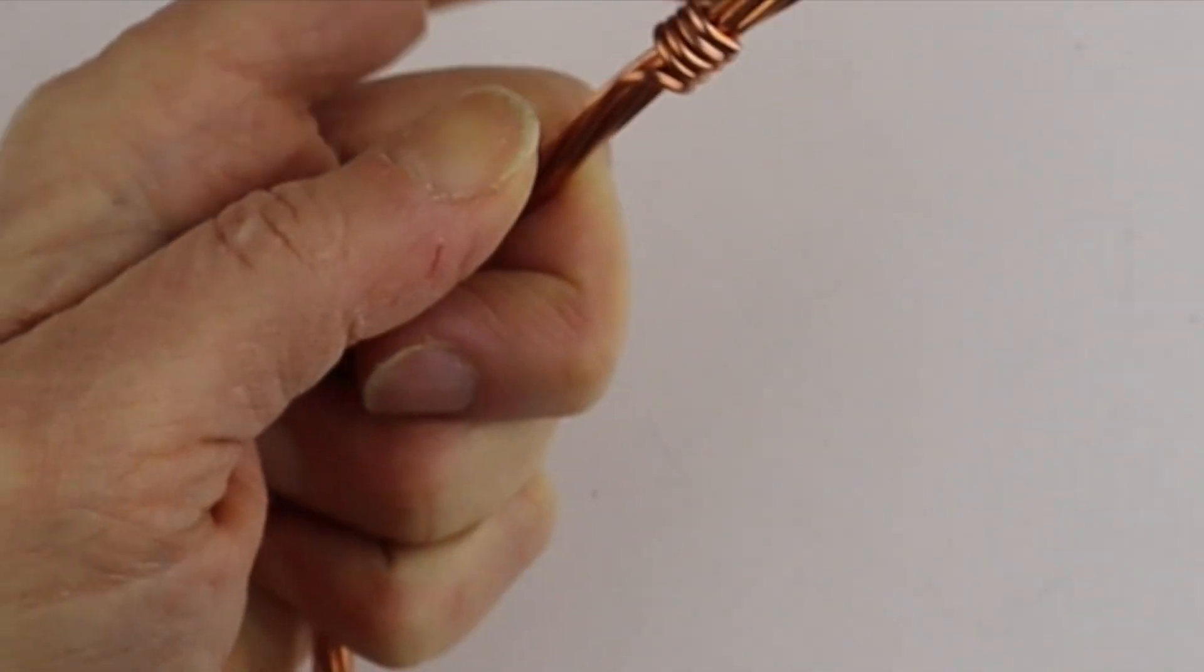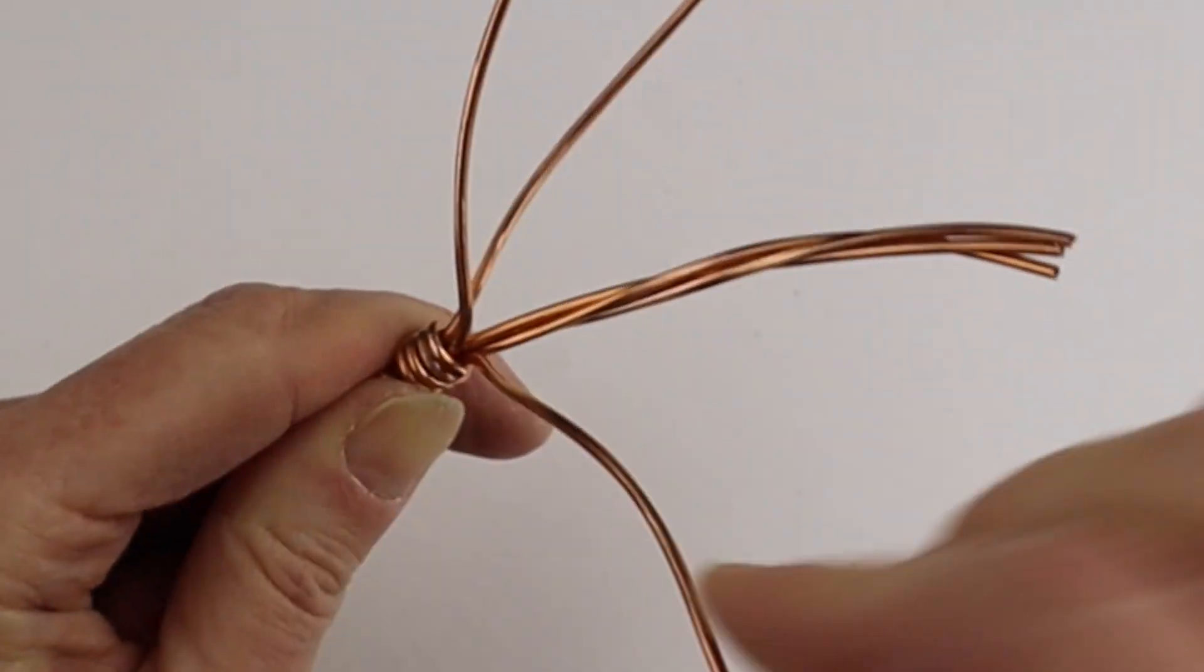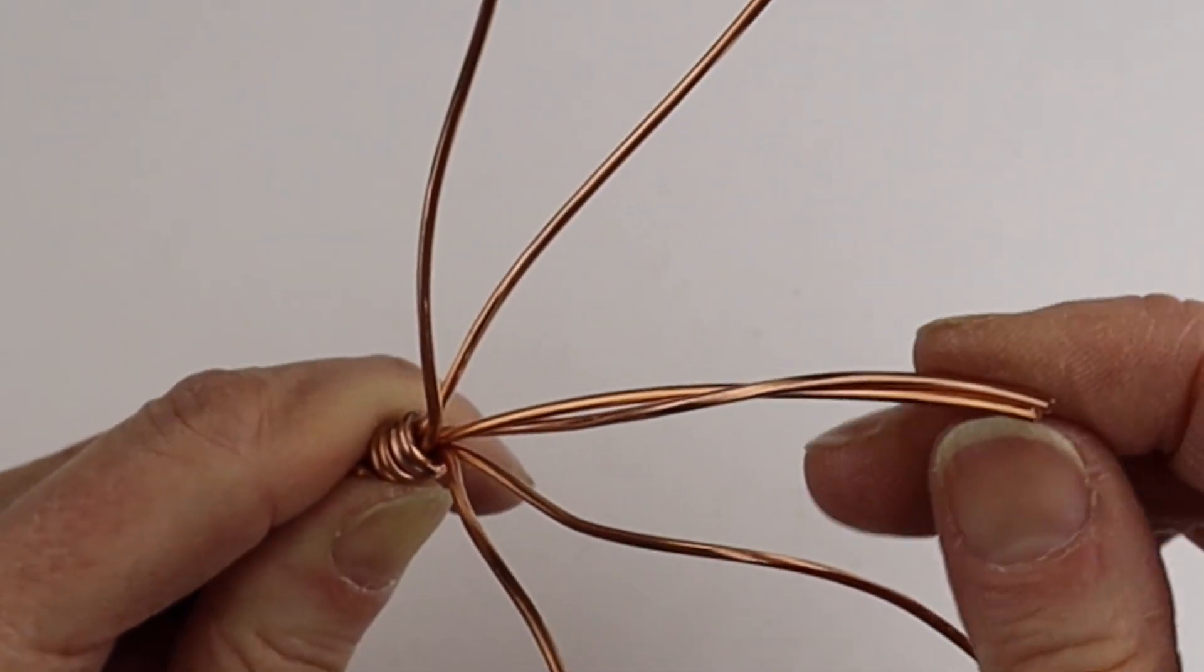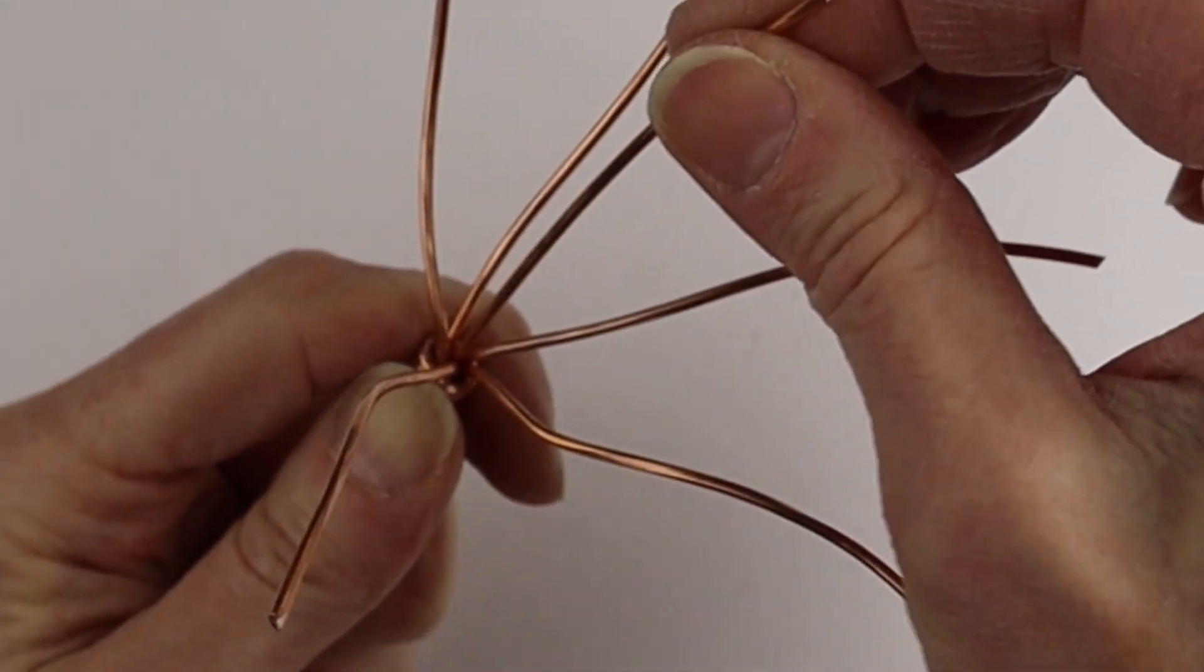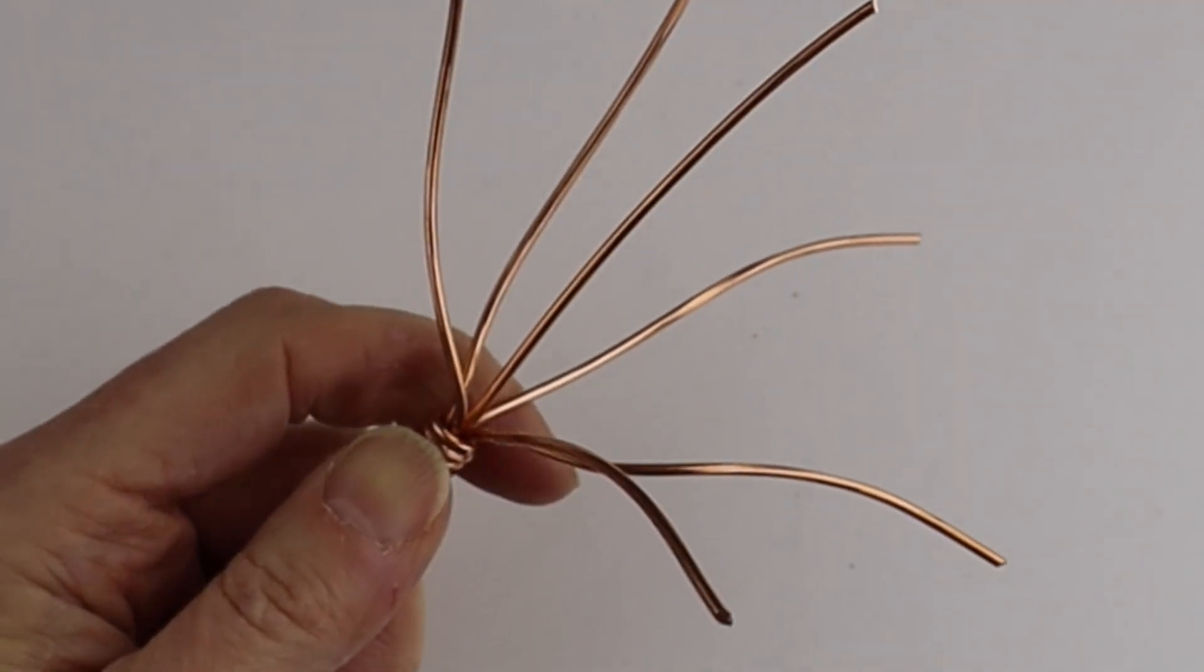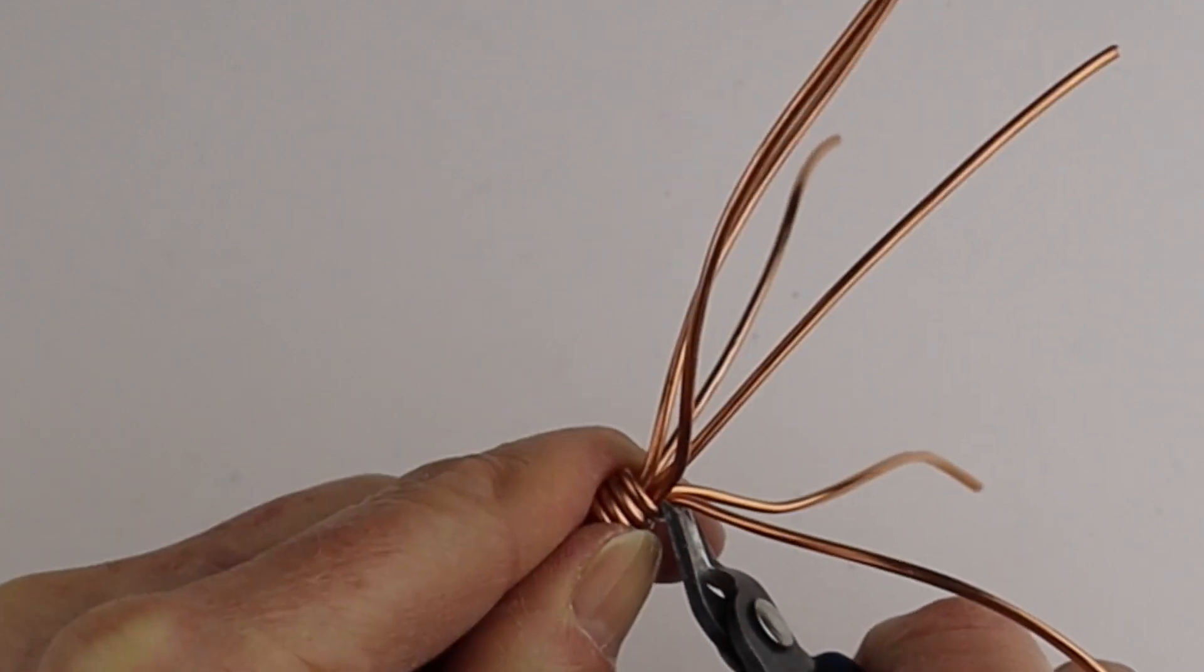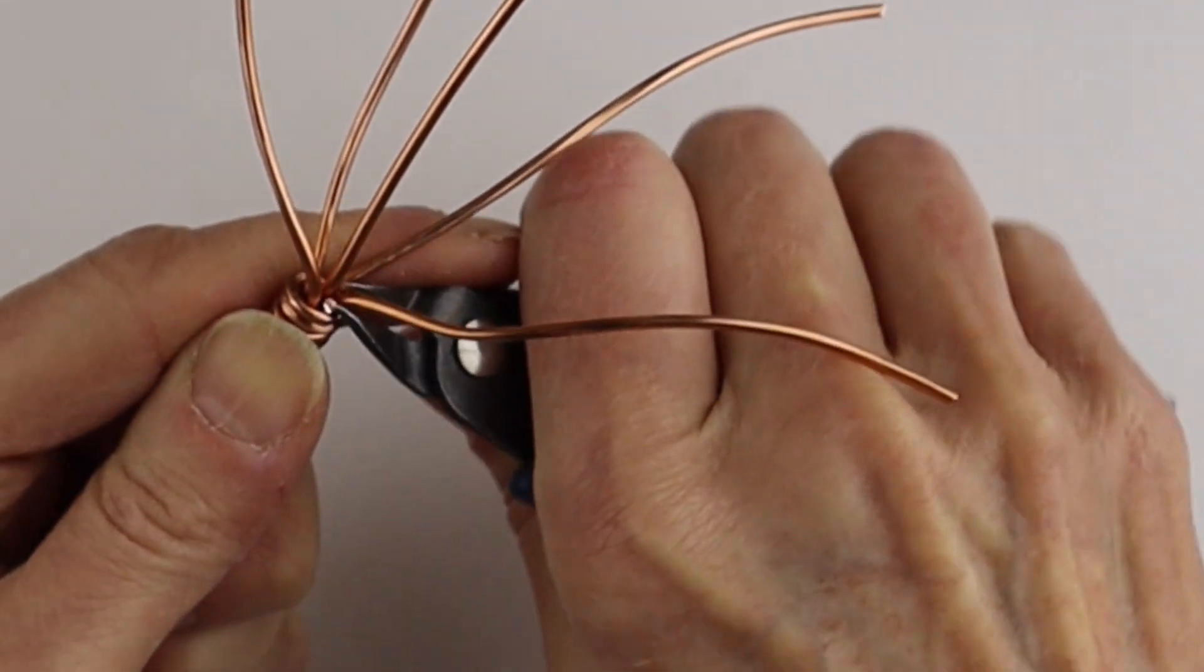Now open up these wires to find out which one is most in the middle. Whatever one is in the middle leave it there and then we're just going to go around and clip these other wires. Just go around and clip them as low down as you can so we can get rid of them.